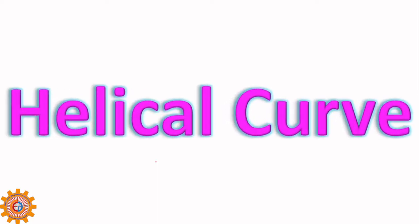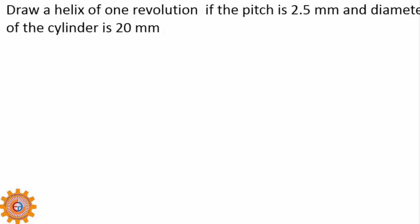Now, I will take up the helix or helical curve. Helix is the curve. You can use interchangeably. Draw helix of one revolution. If the pitch is 2.5 mm, and the diameter of the cylinder is 10 mm. This is the subject about thread. That is, thread form on a cylinder. That becomes, we sometimes call it as a bolt.